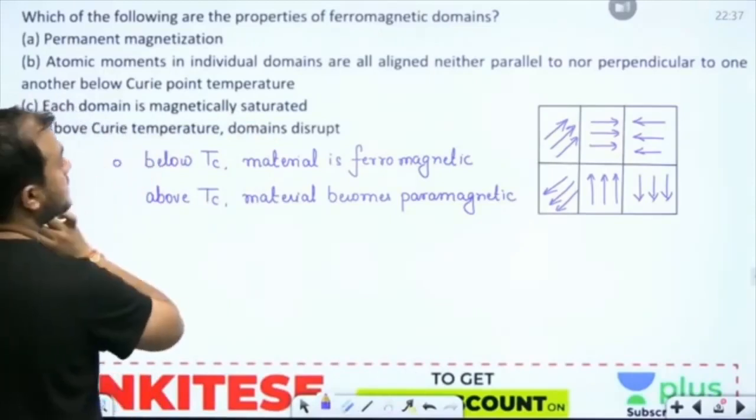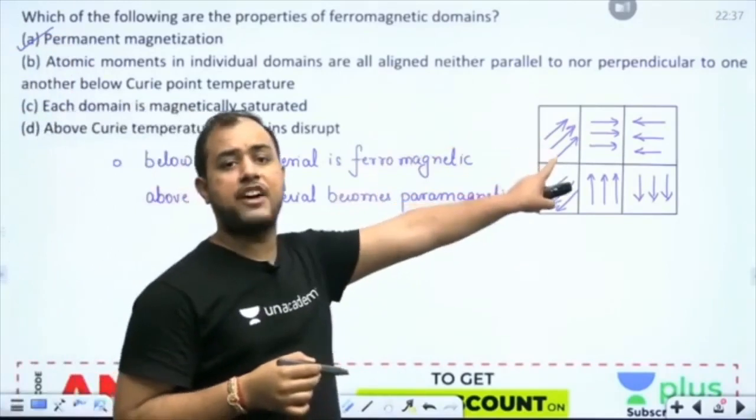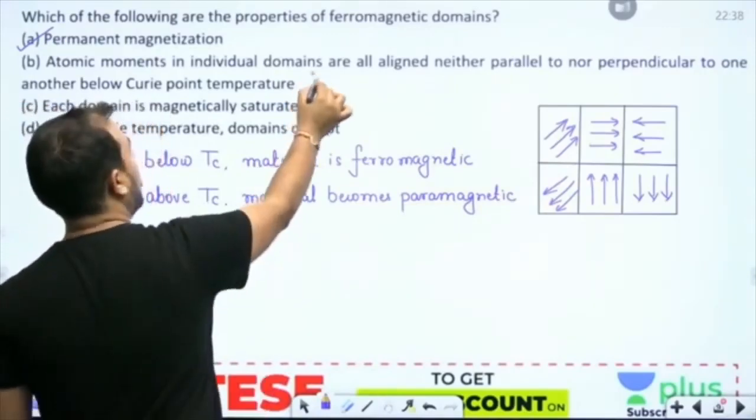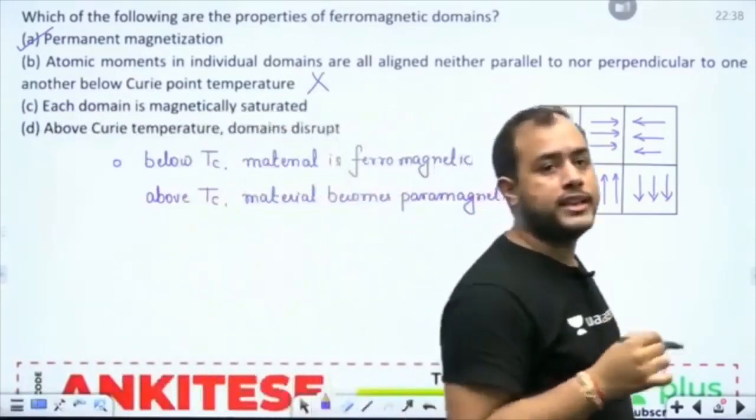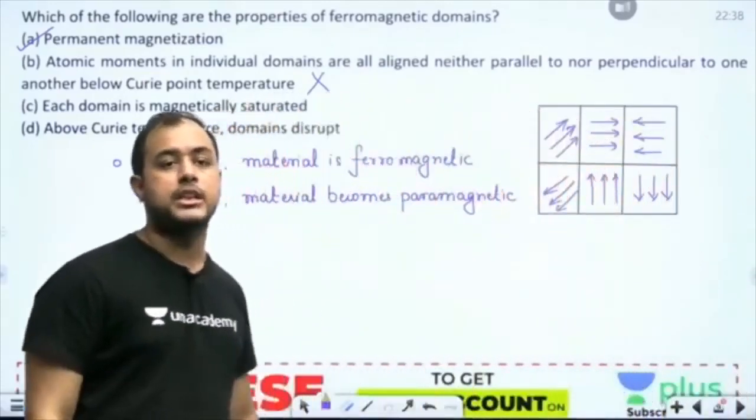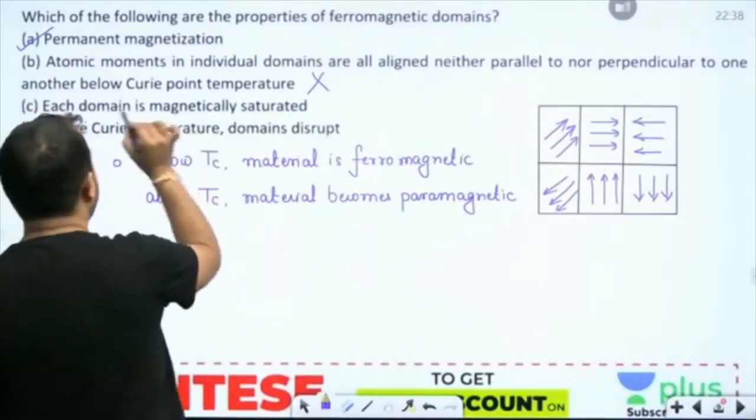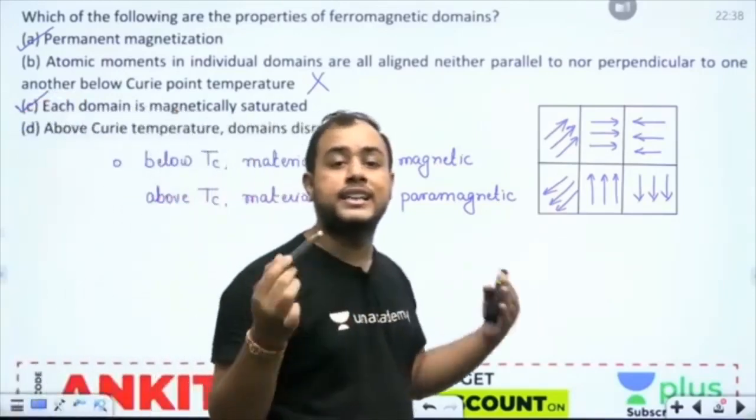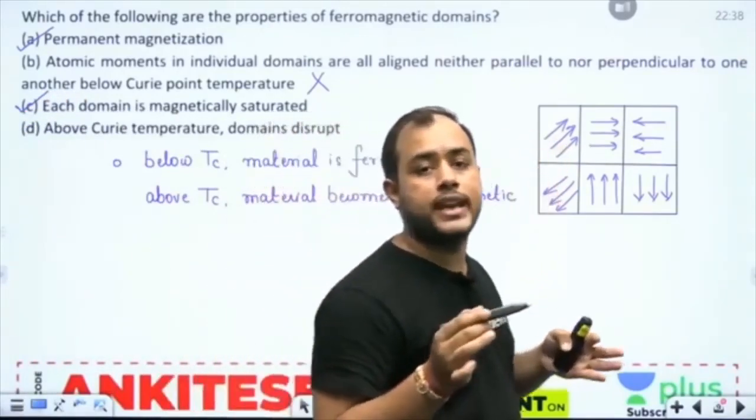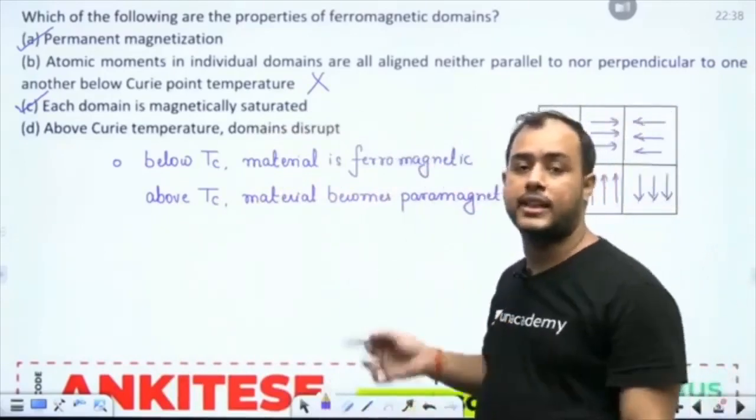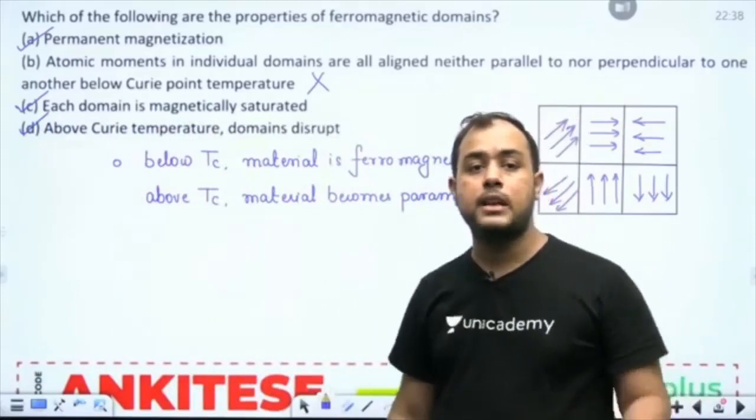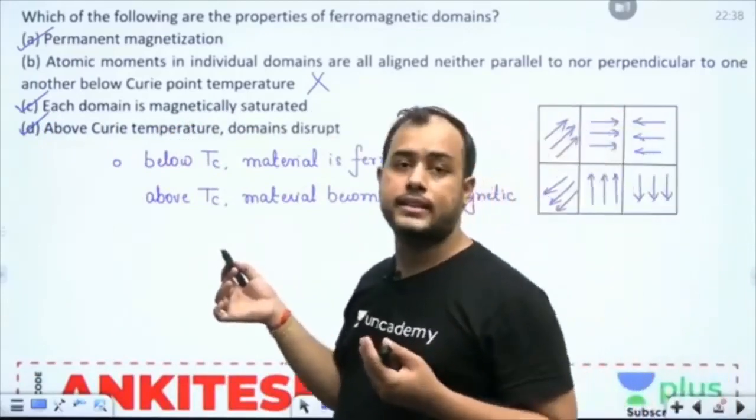It is saying permanent magnetization, correct. Domains have permanent magnetization. Atomic moments are neither aligned parallel nor perpendicular, wrong. Below Curie's temperature, all the dipole moments are aligned parallel to each other. Each domain magnetically saturated, correct. That means you can't increase the magnetization of each domain. Already all are in parallel. Inside a domain, all dipoles are in parallel. You can't increase it further. Above Curie's temperature, domains disrupt, correct. The material becomes paramagnetic, and in paramagnetic, there are no domains.